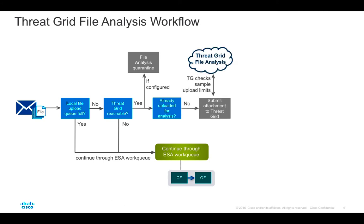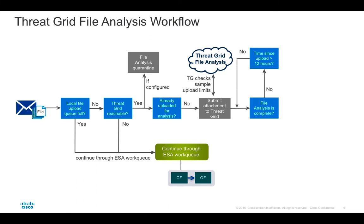If the attachment is not yet known to ThreatGrid, ESA proceeds and submits the file for analysis. ThreatGrid then checks if the sample upload limit for the day has been reached. If so, ThreatGrid discards the request and the associated message is released from quarantine and continues to the ESA work queue. If the upload limit has not been reached, the file gets accepted and queued by ThreatGrid. Additional daily submissions can be added through sample packs or a ThreatGrid Premium subscription. ESA also adds a record of the SHA-256 of the file to its internal database, where it is kept for up to 12 hours.